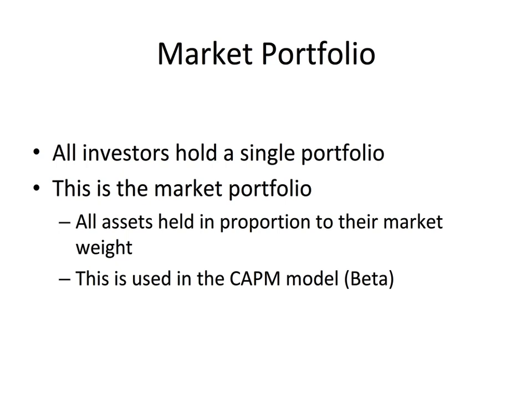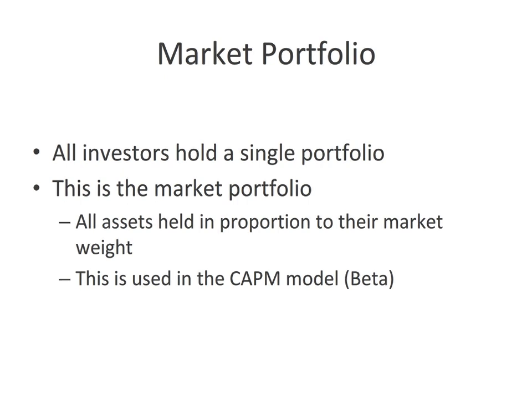One of the results of Capital Market Theory, and the most important result, is that there is a market portfolio that all individuals will hold. All assets are held in proportion to their market weights, and this is what's used to develop the beta in the capital asset pricing model — this is the theory used in developing that beta.